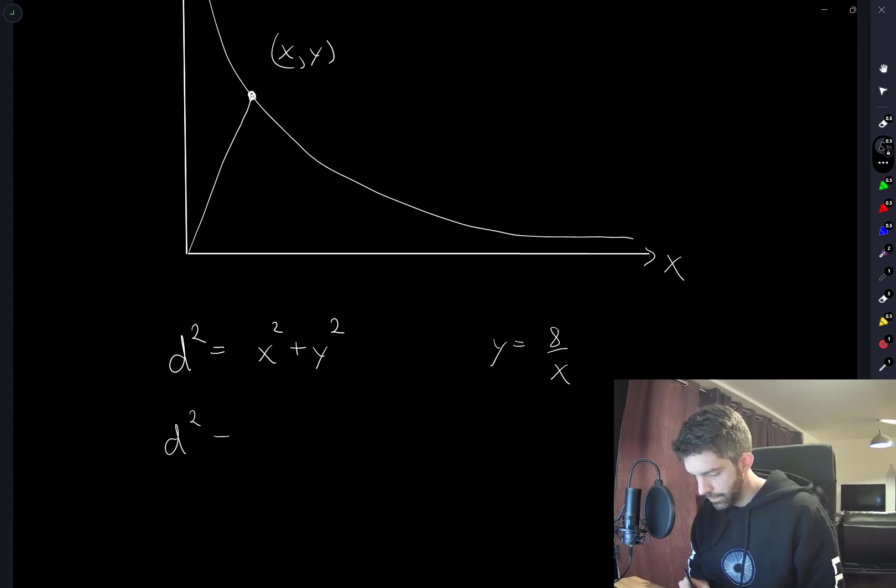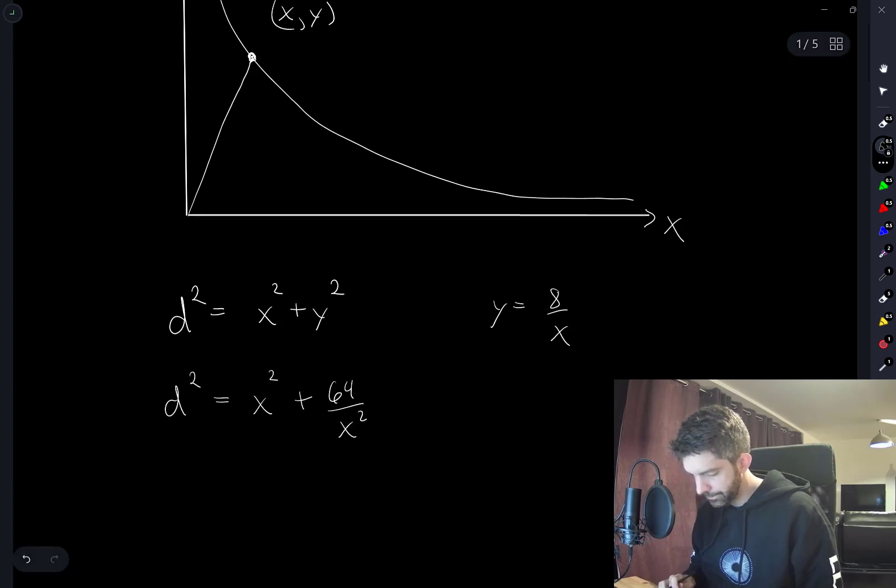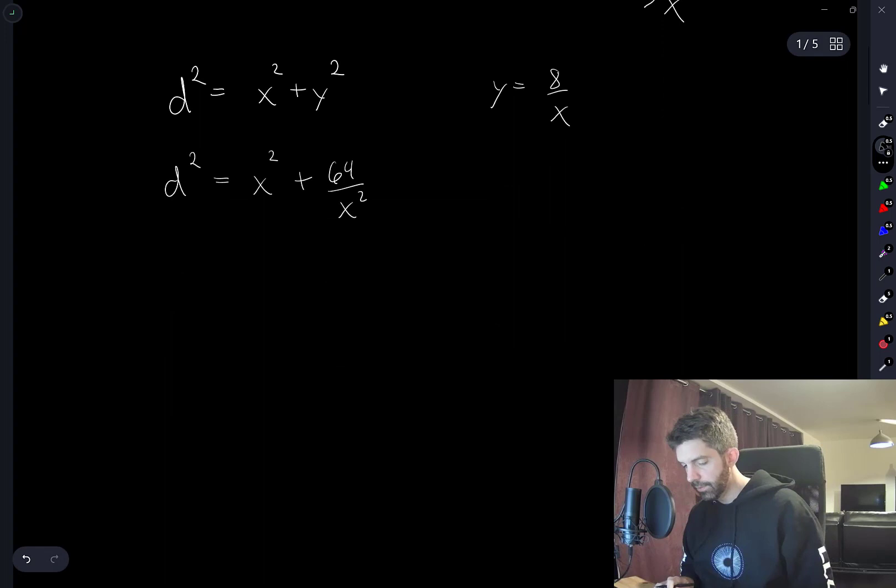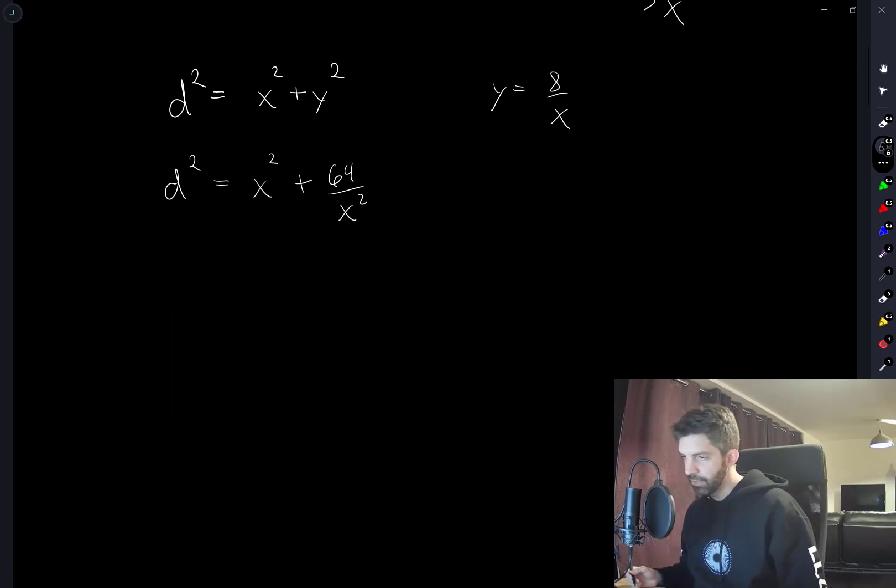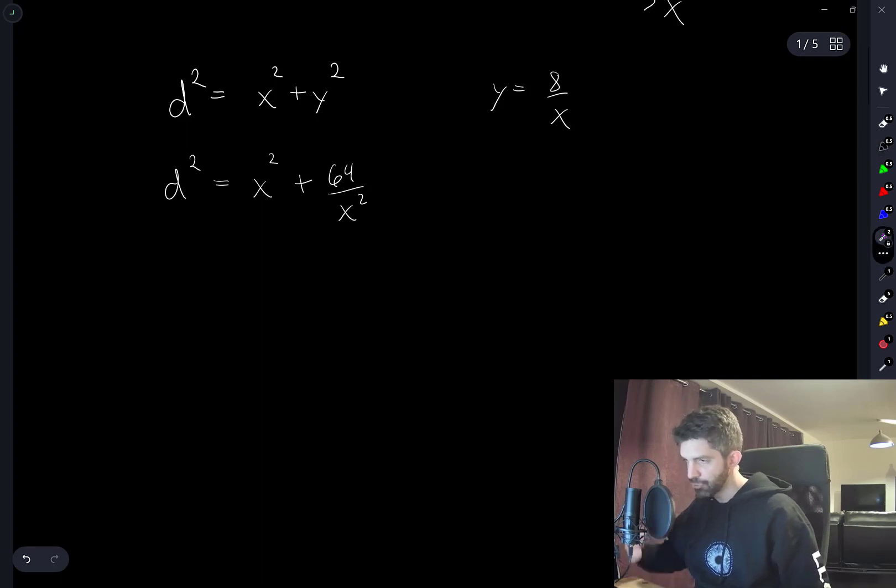So the distance squared is x squared plus 64 over x squared. And I want to minimize, minimizing the distance is the same as minimizing the square of the distance. So I don't have to take square roots here until I actually evaluate what the distance is. I'm going to treat this as a function of x and minimize it.